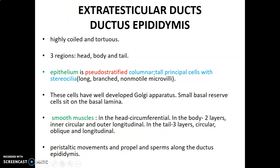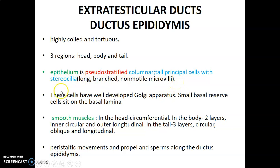So we go to the extratesticular ducts. A good example is the epididymis, which is a highly coiled and tortuous duct with three regions: a head, body, and tail. The epithelium is pseudostratified columnar. It has tall principal cells with stereocilia, which are long-branched non-motile microvilli. These cells have well-developed Golgi apparatus, and there is a small basal reserve cell sitting on the basal lamina.